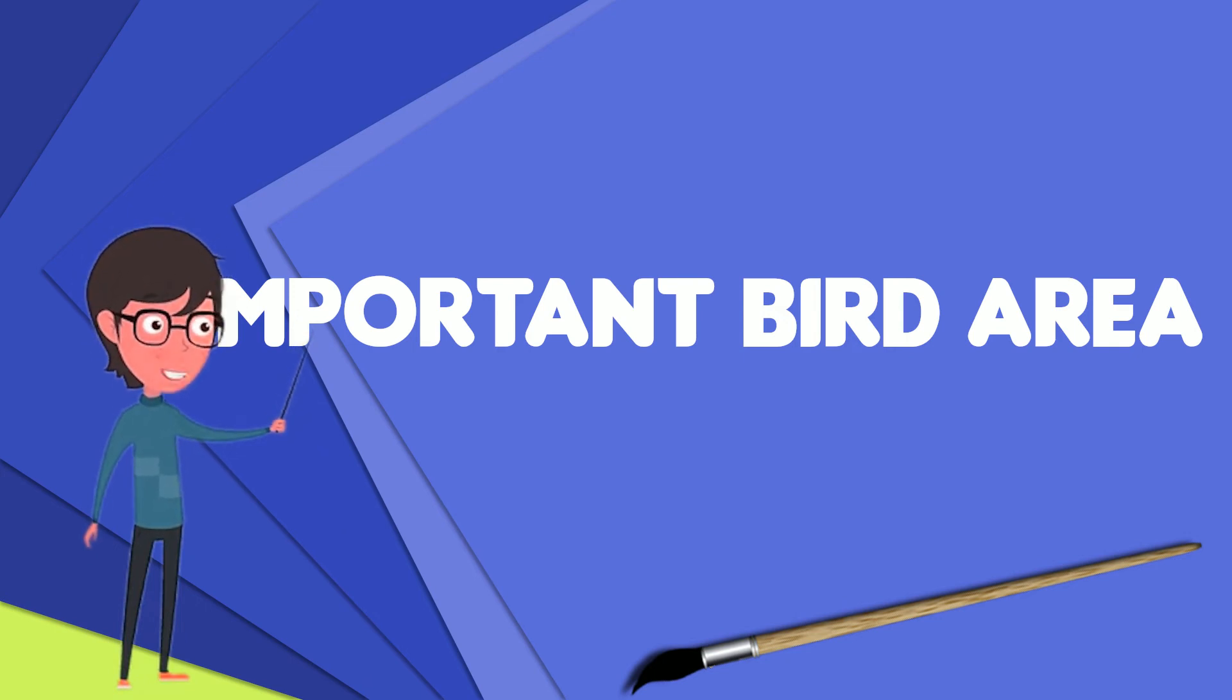over 12,000 IBAs worldwide. These sites are small enough to be entirely conserved and differ in their character, habitat, or ornithological importance from the surrounding habitat. In the United States, the program is administered by the National Audubon Society.